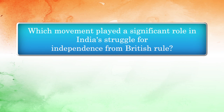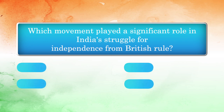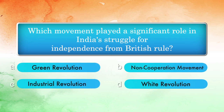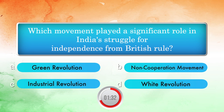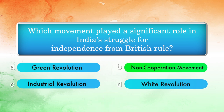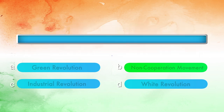Which movement played a significant role in India's struggle for independence from British rule? Options: Green Revolution, Non-Cooperation Movement, Industrial Revolution, White Revolution. Answer: Non-Cooperation Movement.